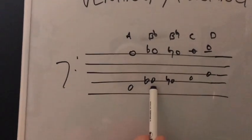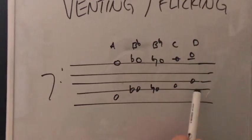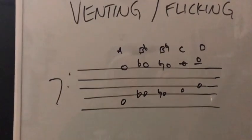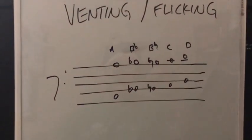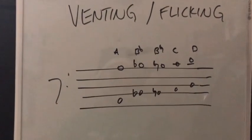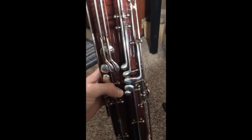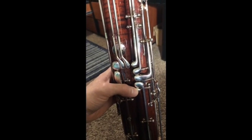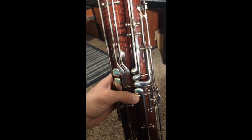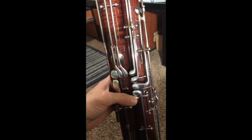Same for the B flat, B natural, C, and D. They all require you to lift the whisper key and then blow faster air. What I mean by the whisper key is this bottom key right here. This should always be pressed when playing notes below the top of the staff A.